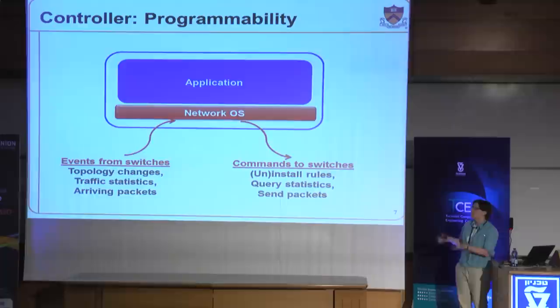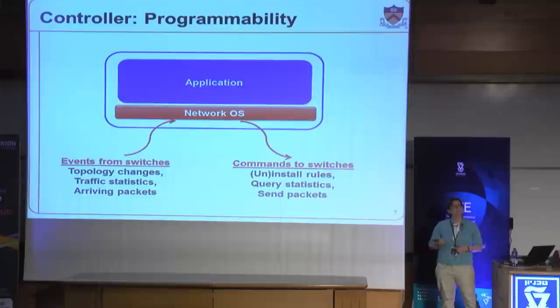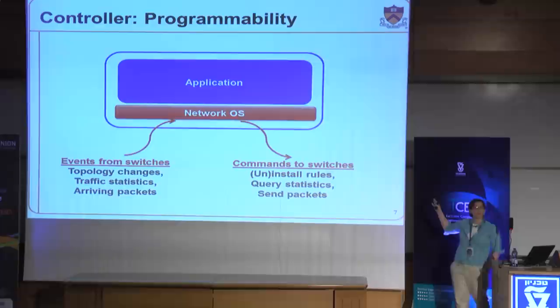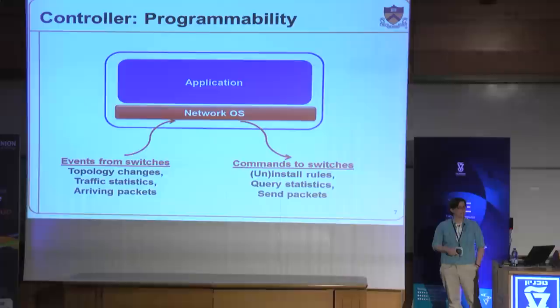What does this network OS do? It processes events that come in from the network — topology changes like switches or links going up or down, statistics arriving from the network, and occasional packets sent to the controller because the switch doesn't know what to do. In response, an event handler in the application will usually affect some sort of change in the network, like adding or removing rules, reading counters, or even sending a packet previously received by the controller. A big question is what should the abstractions on this controller be to effectively control OpenFlow networks — and that's exactly the space we're in.